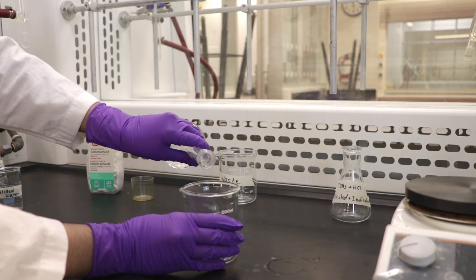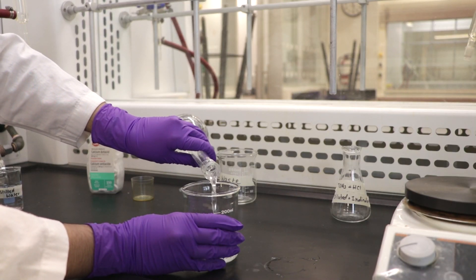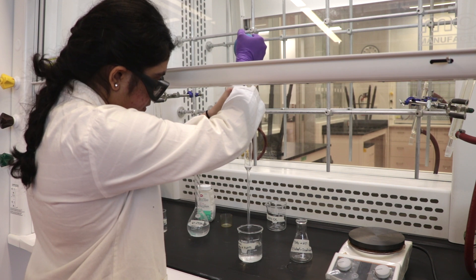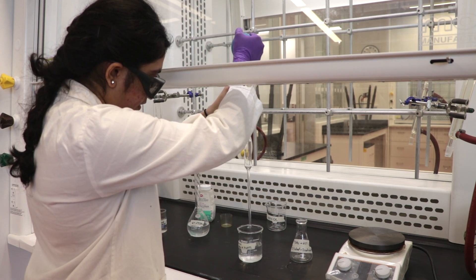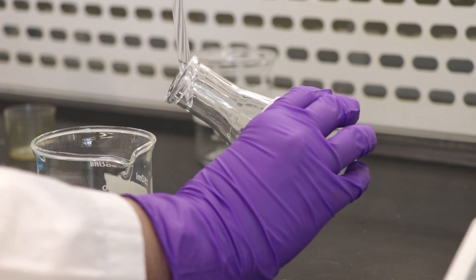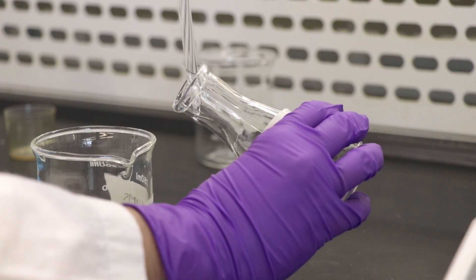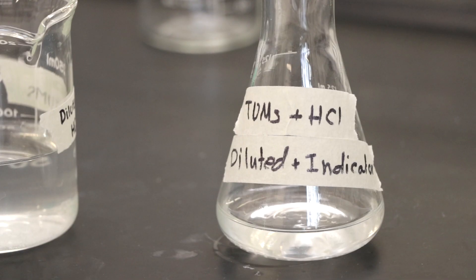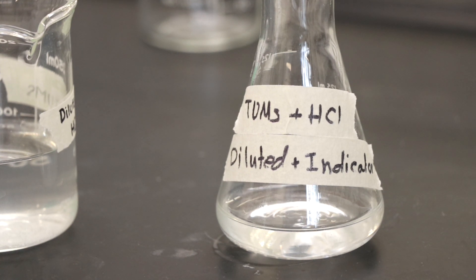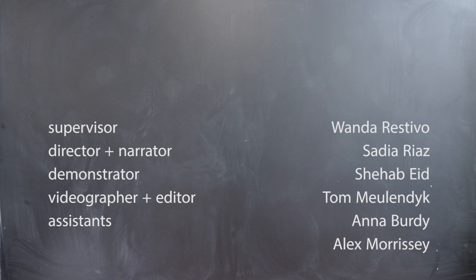Transfer some of the diluted solution to a small beaker to make pipetting easier. Then use a volumetric pipette to transfer 25 milliliters of the solution to a 125 milliliter Erlenmeyer flask. Add three to four drops of the indicator to the solution and titrate. A link to the titration video is in the description below.